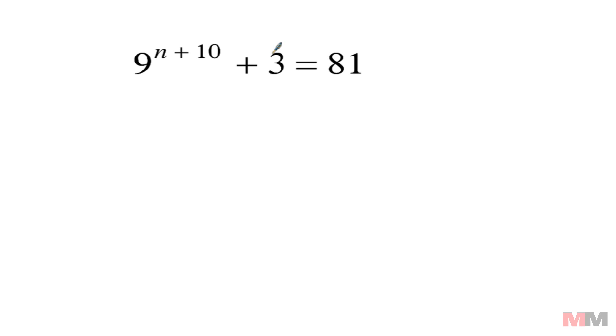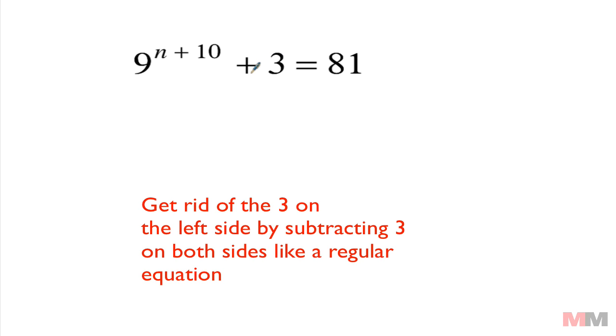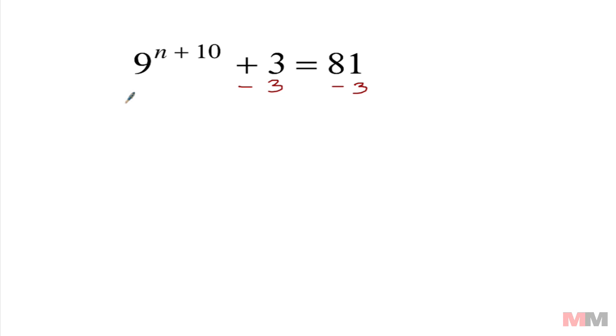Before we take the natural log of both sides, because if I do that right now it's gonna look really confusing, try to make the equation simpler by getting rid of this plus 3 right here. Get rid of a plus 3 on the left side by subtracting 3 on both sides. So I get 9^(n+10) equals - these cancel off - 81 minus 3 which is 78.